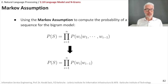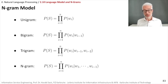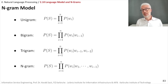For unigrams, we only consider the occurrence of a single word relative to all words in the corpus. For bigrams, we only look at the last preceding word. For trigrams, we take into account the two preceding words. For n-grams in general, we take into account one to n minus one preceding words.